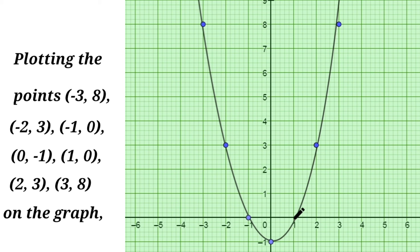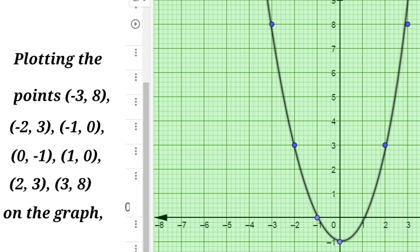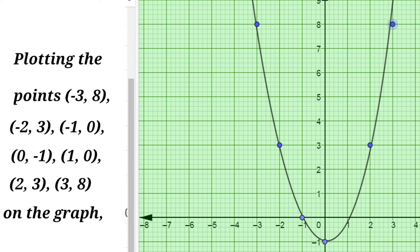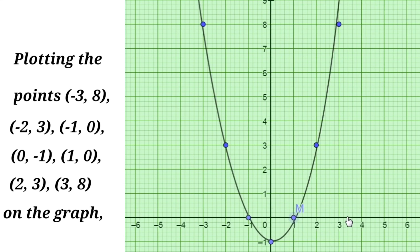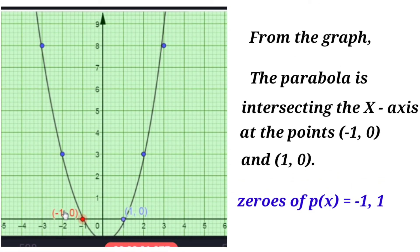From the parabola, we now have to find the zeros by observing where the parabola intersects the x-axis. From the graph, the parabola intersects the x-axis at the points (−1, 0) and (1, 0). Therefore, the zeros of p(x) are −1 and +1. These are the zeros of the given quadratic polynomial. This completes the fifth part — we have now completed all five parts of the third problem. Thanks for watching!